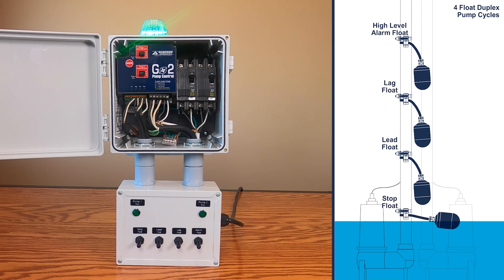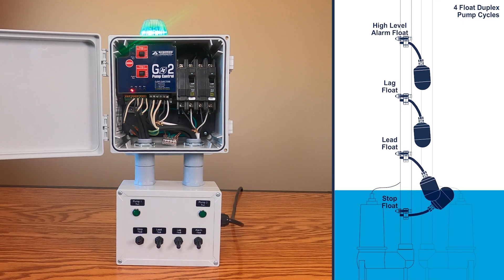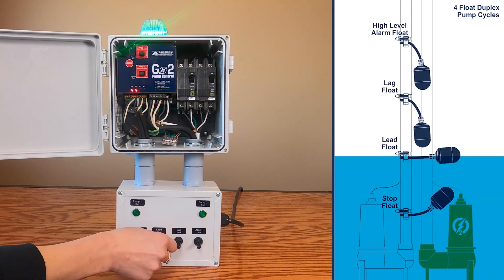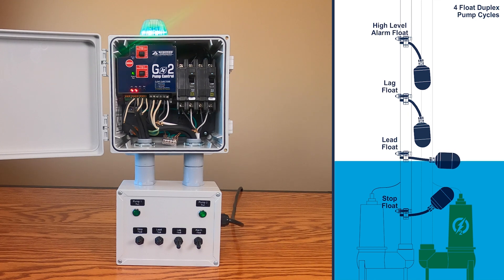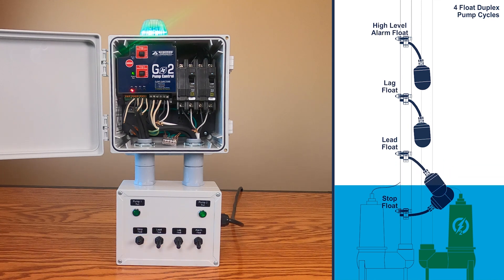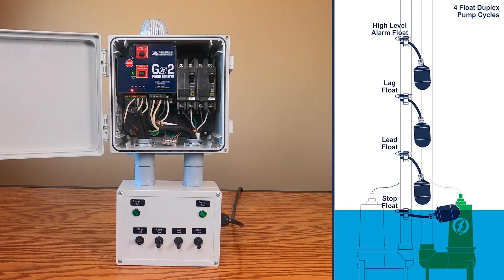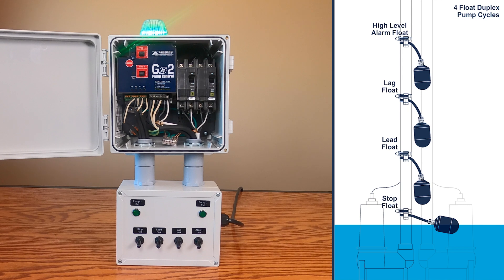As the water rises, the off float will activate. The water level continues to rise and the lead float will activate and pump 2 will turn on. Note the beacon will begin blinking indicating the pump is running. As the pump is lowering the water level, the lead float will tilt down, but the pump will remain on all the way down to the off float. This completes the pump cycle.